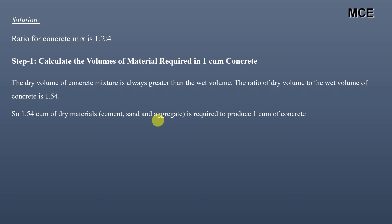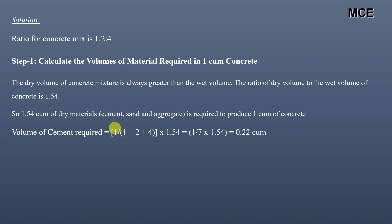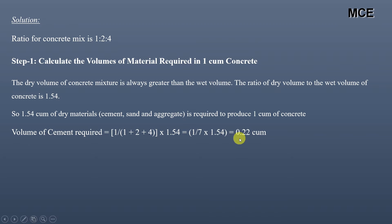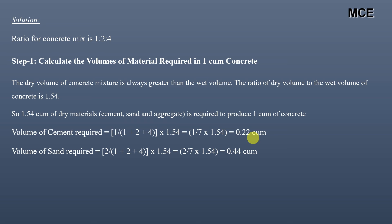So if we have to make one cubic meter of wet concrete, we have to take 1.54 cubic meters of dry materials. Volume of cement required = (1 ÷ (1+2+4)) × 1.54 = 1/7 × 1.54 = 0.22 cubic meters. This is the volume of cement required to make 1 cubic meter of wet concrete.